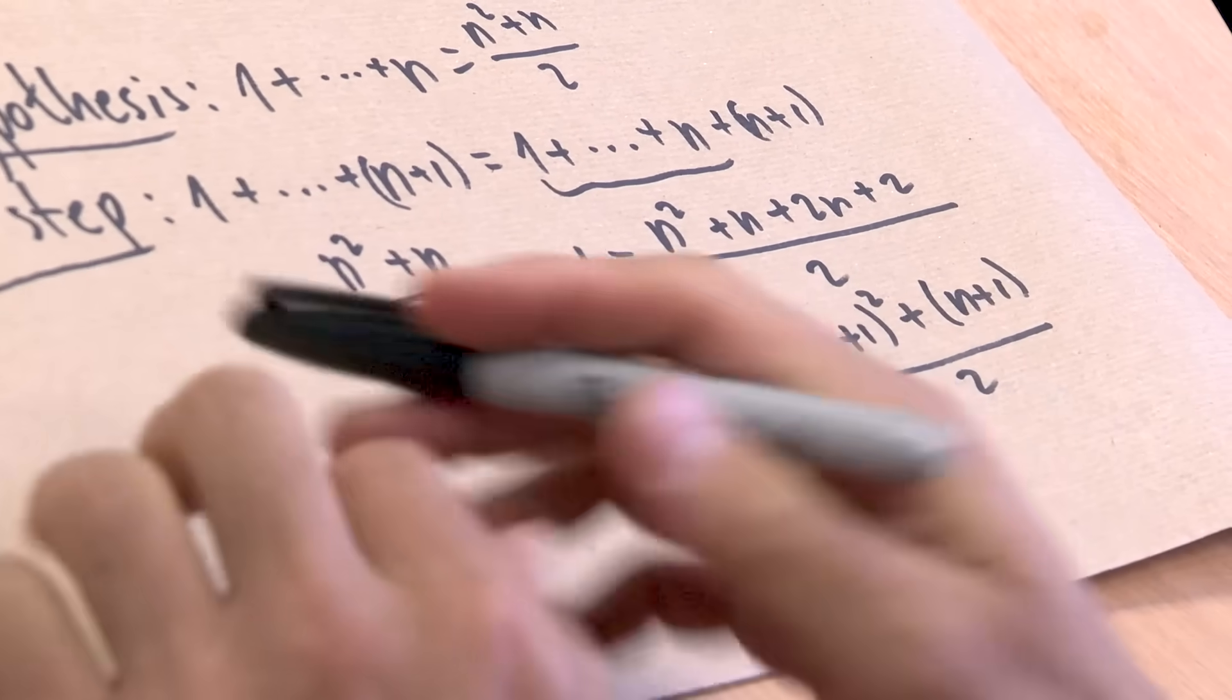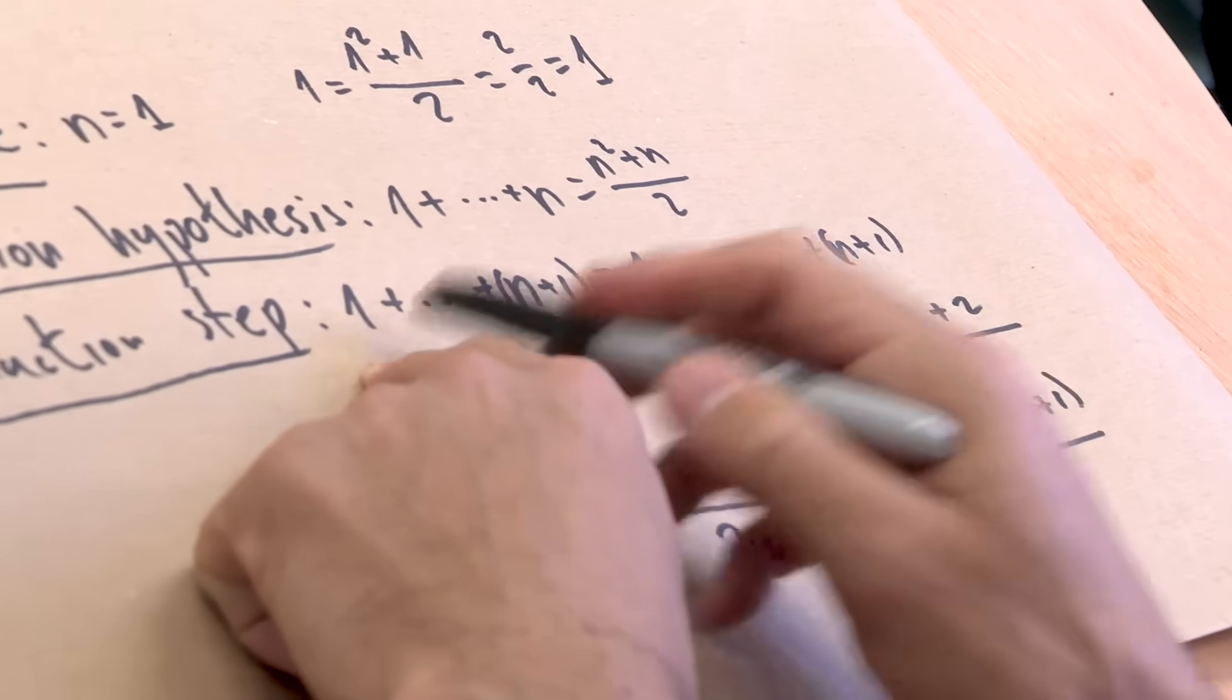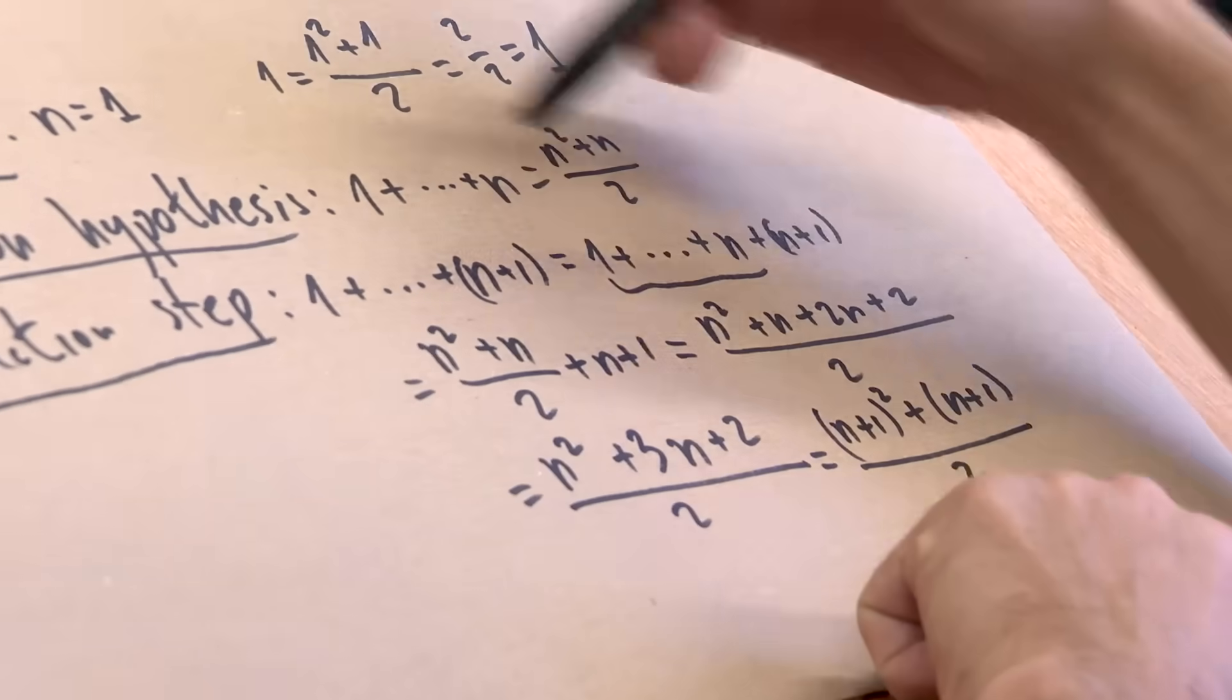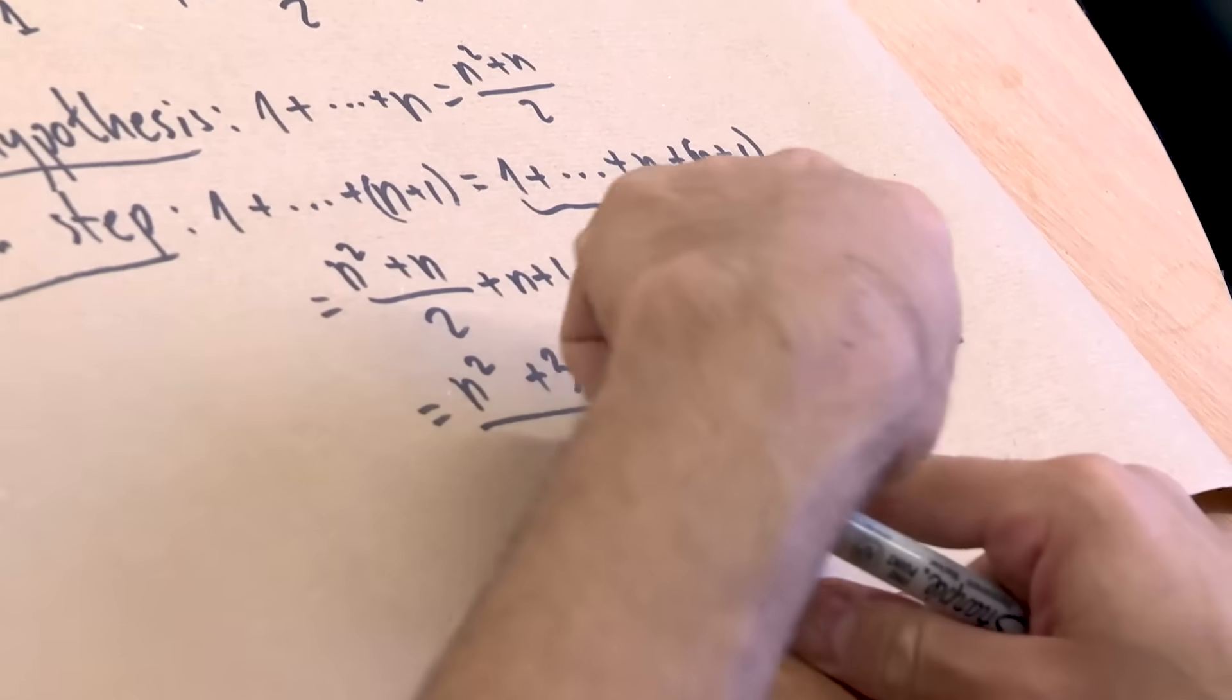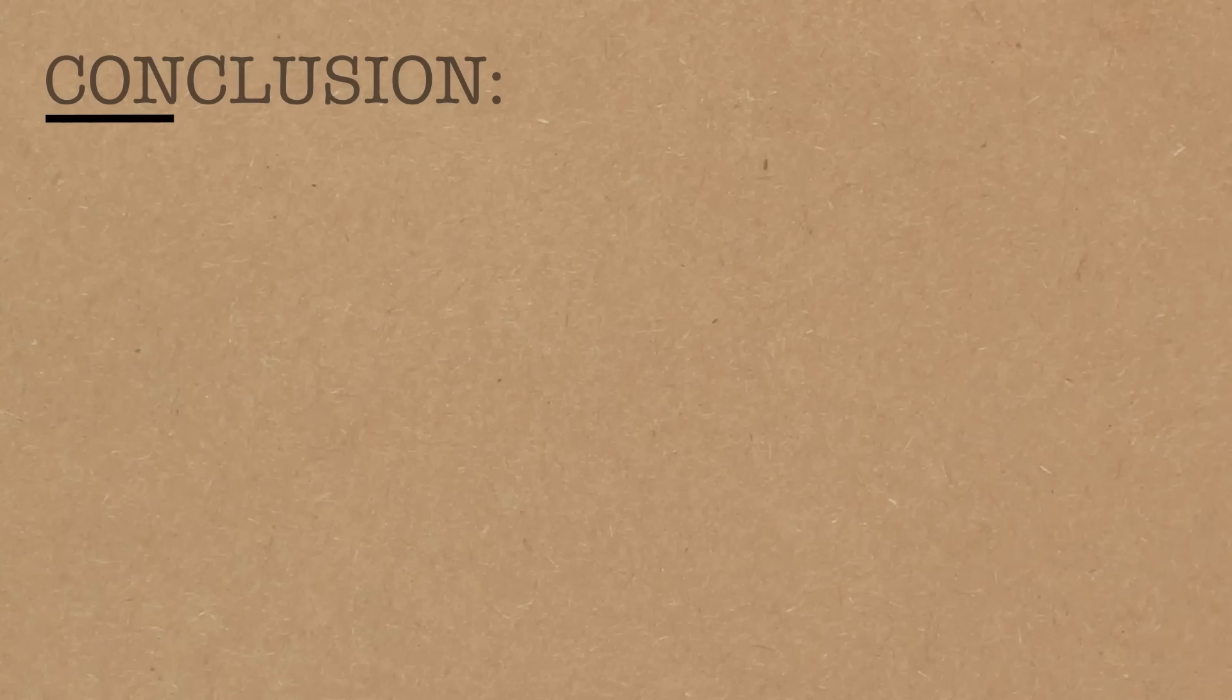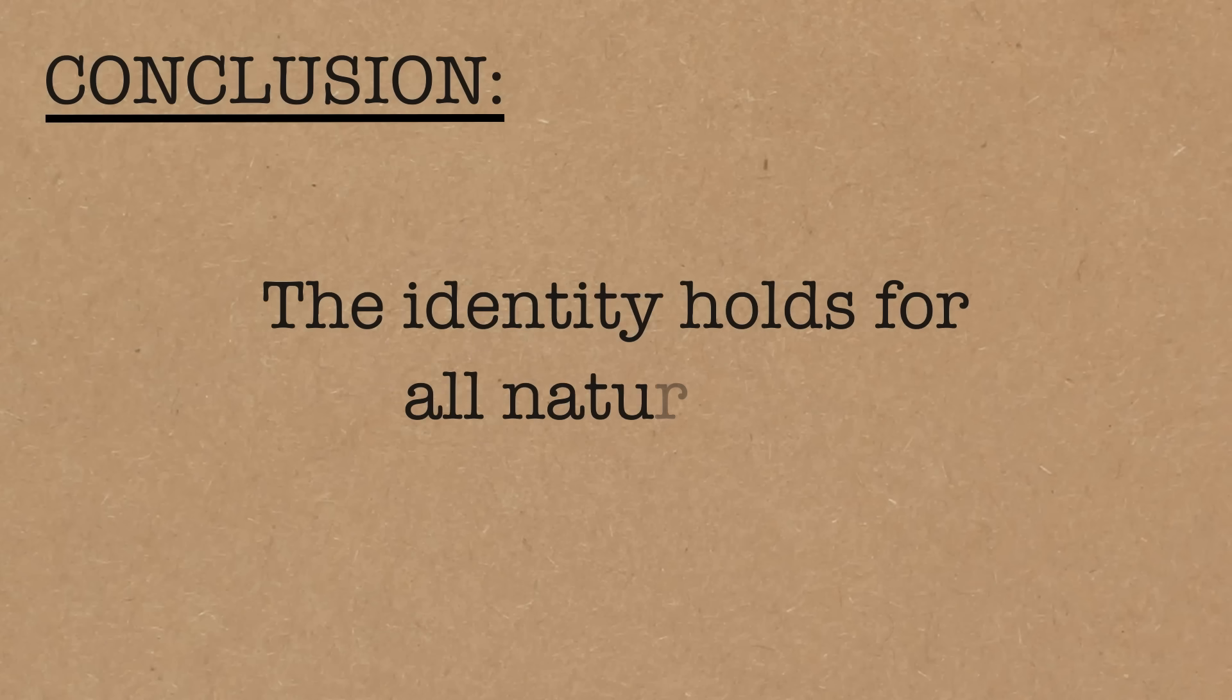So, now we said, okay, so we have proved that the sum up to n plus 1 also has the same form as this. Instead of n, we have n plus 1. The conclusion is that the identity hold for all natural n. That's a conclusion. That's how we prove that this is always true. Because it always works for the next one. Exactly.